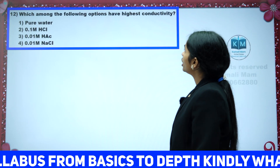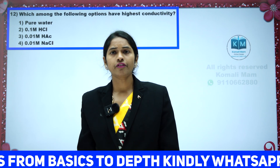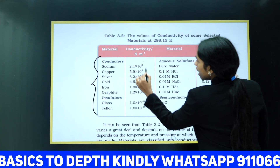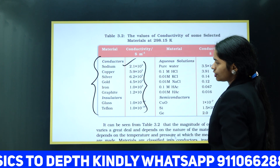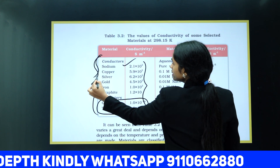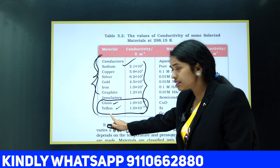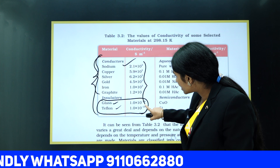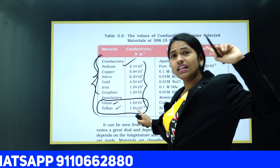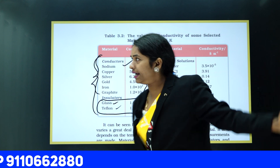Which among the following options has the highest conductivity? To find conductivity, see this table. All metals are more conductive in nature. Non-metals are insulators. Insulators include glass and Teflon — their conductivity is as low as 10⁻¹⁶ to 10⁻¹⁸, which means they are insulators.